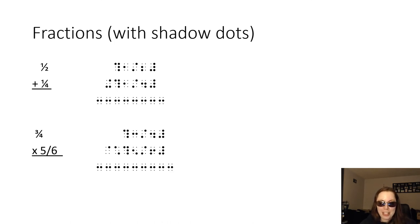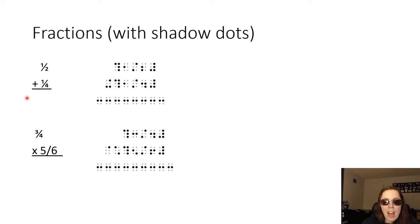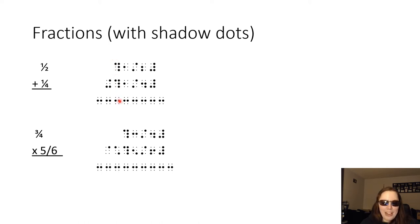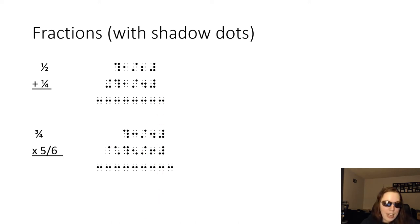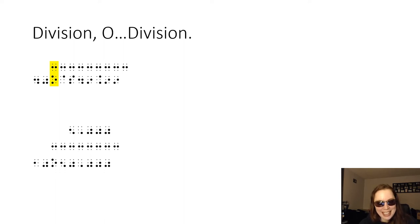Fractions can be added vertically in Nemeth, and I would argue they're way more fun to add vertically in Nemeth than in print. One half plus one fourth in print doesn't gain you much by doing it vertically, but when you line it up in Braille, everything actually lines up — indicators, numerators, fraction lines, denominators, and terminators all line up. In the case of multiplication, where you multiply the top by the top and the denominator by the denominator, that's actually super helpful for Braille readers.